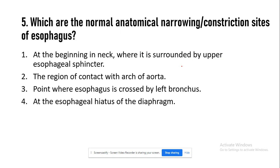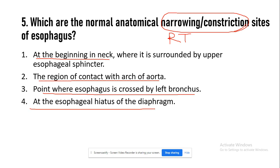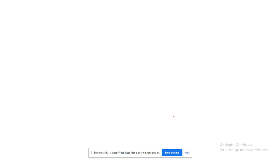The last question is: what are the normal anatomical narrowing or constriction sites of the esophagus? These are also the normal points of resistance when inserting a Ryle's tube. First, at the beginning in the neck where it is surrounded by the upper esophageal sphincter. Second, at the point of contact with the arch of the aorta. Third, where the esophagus is crossed by the left bronchus. Fourth, at the esophageal hiatus of the diaphragm. Thank you.